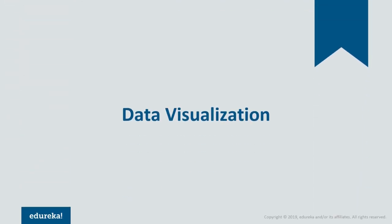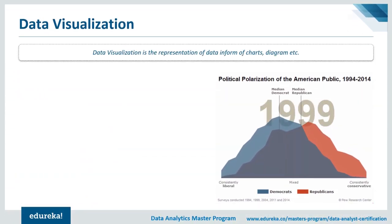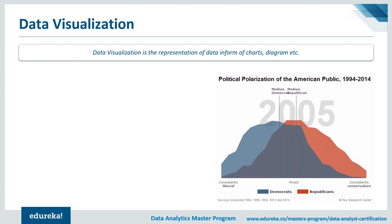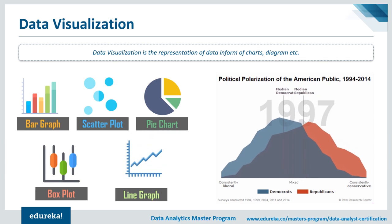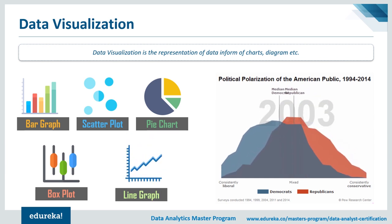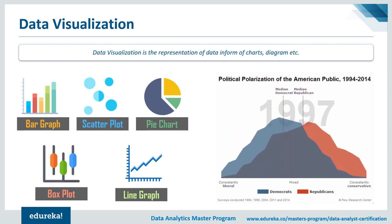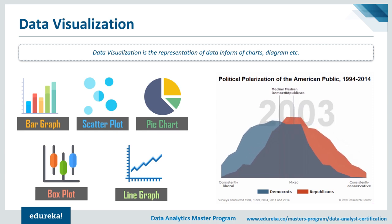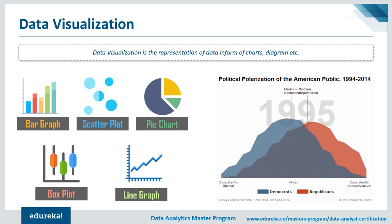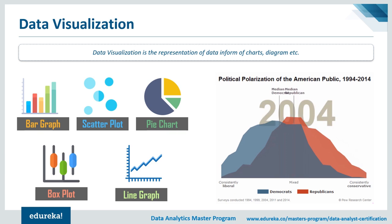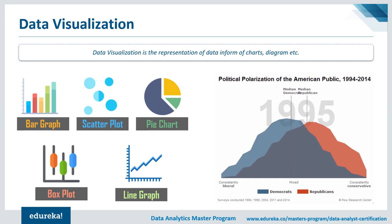Data visualization is the representation of data in the form of charts, diagrams, etc. You can represent data as bar graphs, scatter plots, pie charts, box plots, line graphs, and more. You can also use complex plots like histograms or combine two or three different plots together. It's completely based on your understanding and need — how you want to visualize your data.